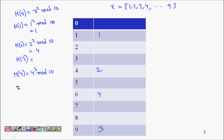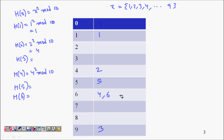h(5) = 5² mod 10 = 25 mod 10 = 5, so 5 goes into cell 5. h(6) = 6² mod 10 = 36 mod 10 = 6, so 6 also maps to cell 6 — and here we encounter a collision.